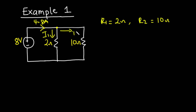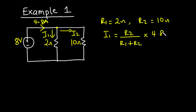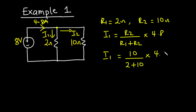To find I1, we use I1 = (R2 / (R1 + R2)) × I_total. So I1 = (10 / (2 + 10)) × 4.8 amperes. Calculating: 10 divided by 12 times 4.8 gives us I1 = 4 amperes.